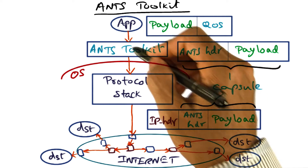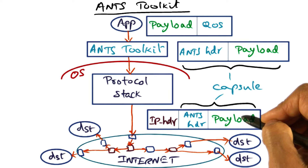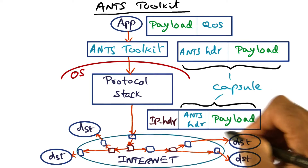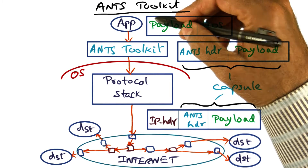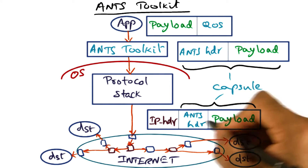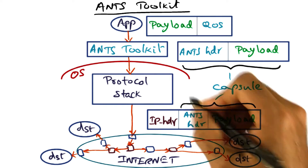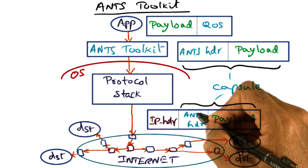But we know that this payload consists of two parts: one is the normal payload that the application generated, and in addition to that, there is the ANTS header that has been added by the ANTS toolkit.